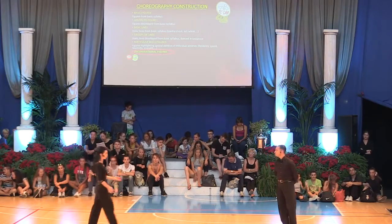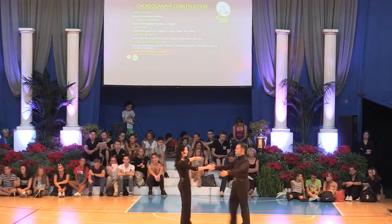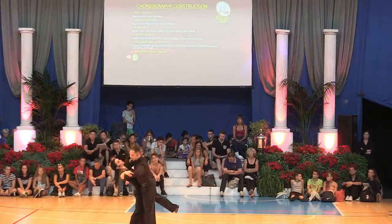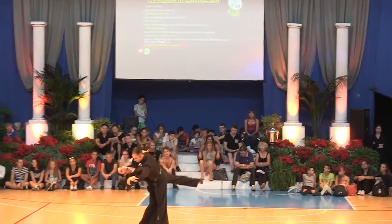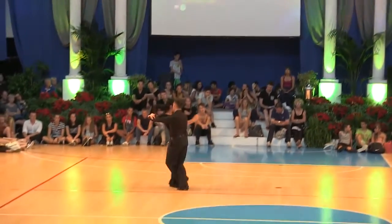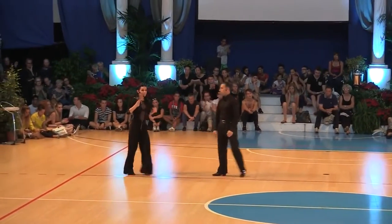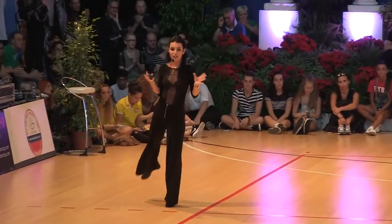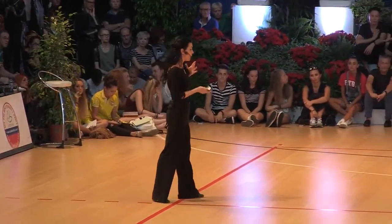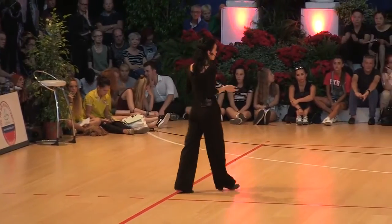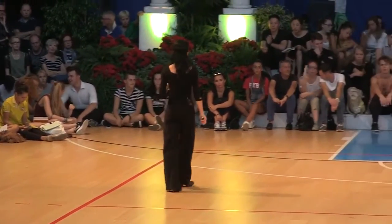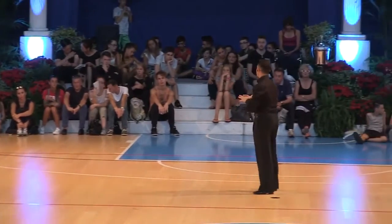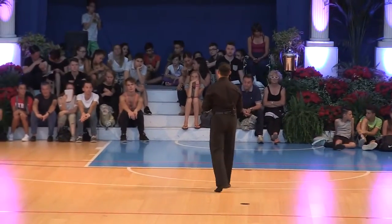For example, we can show one such figure which could be something like this. This is one of these special skilled figures where you have to have good balance and you need to be quite flexible, and this can be included in a choreography. We used this figure a long time ago in Quickstep.